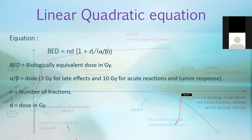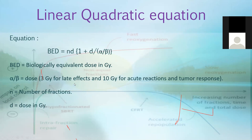The linear quadratic equation: Biological Equivalent Dose (BED) in Gray equals n × d × (1 + d / α/β ratio). BED is biologically equivalent dose in Gray. The α/β ratio is a dose in Gray — typically 3 Gy for late effects and 10 Gy for acute reactions and tumor response. Use 10 for tumor and 3 for normal tissue. The Excel sheet forwarded to you includes this equation.